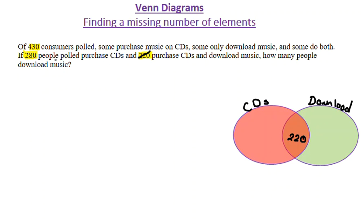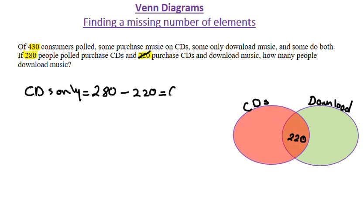I'm going to go back and find that 280 purchase CDs. When they say 280 purchase CDs, it means all the elements within that red circle should be 280 — I can't just write 280 in the non-intersection part. So the number I need to write there is people who purchase CDs only. For CDs only, I have the total, which is 280, minus the intersection, which is 220. So that's 60. I put 60 here because when I add it with the 220, I'll get 280 to fill this group.